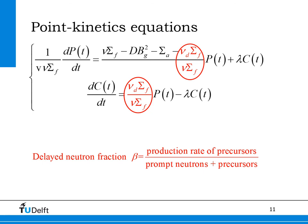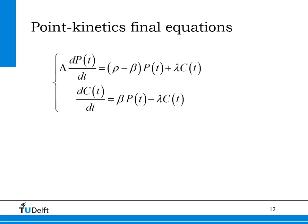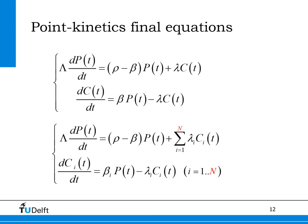The equations on this slide give the point kinetics equations for one family of precursors. It is a coupled set of equations: one for the fission neutron production rate P and one for the precursor atoms C. If we want to include more families of precursors, we must include each family separately and write a balance equation for each family, as shown in the set of equations at the bottom of this slide. The number of families can be 6 or 8.